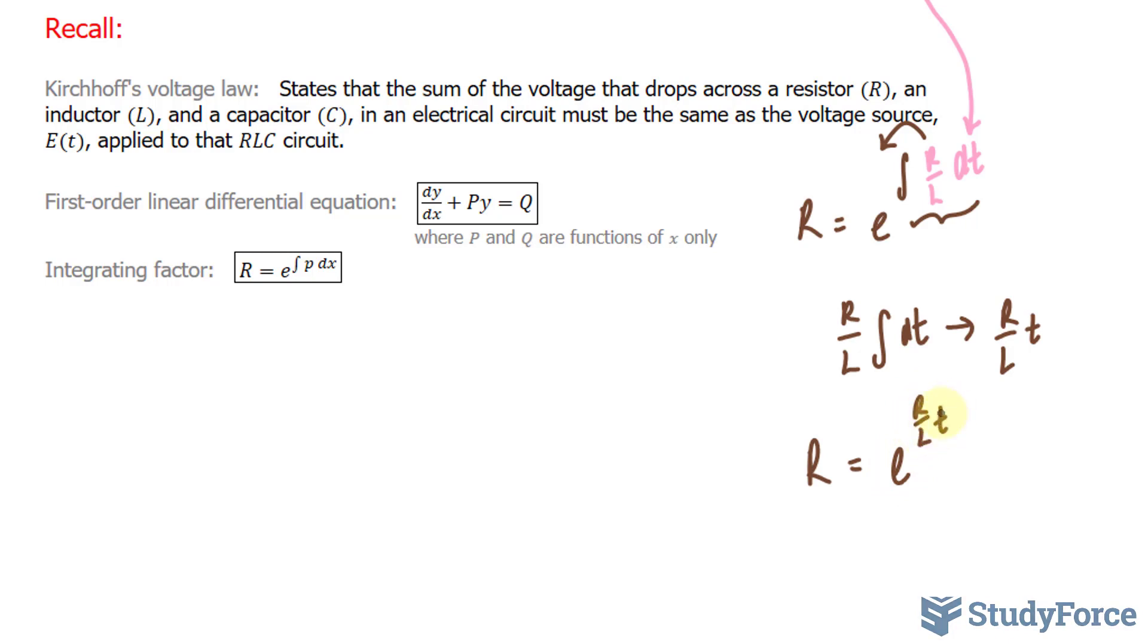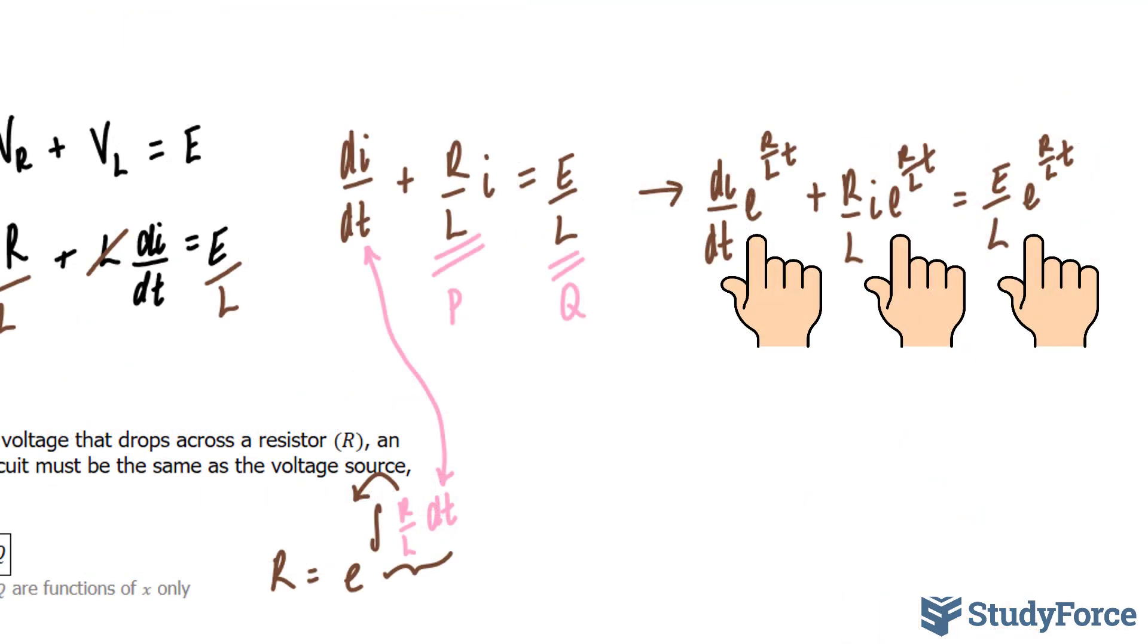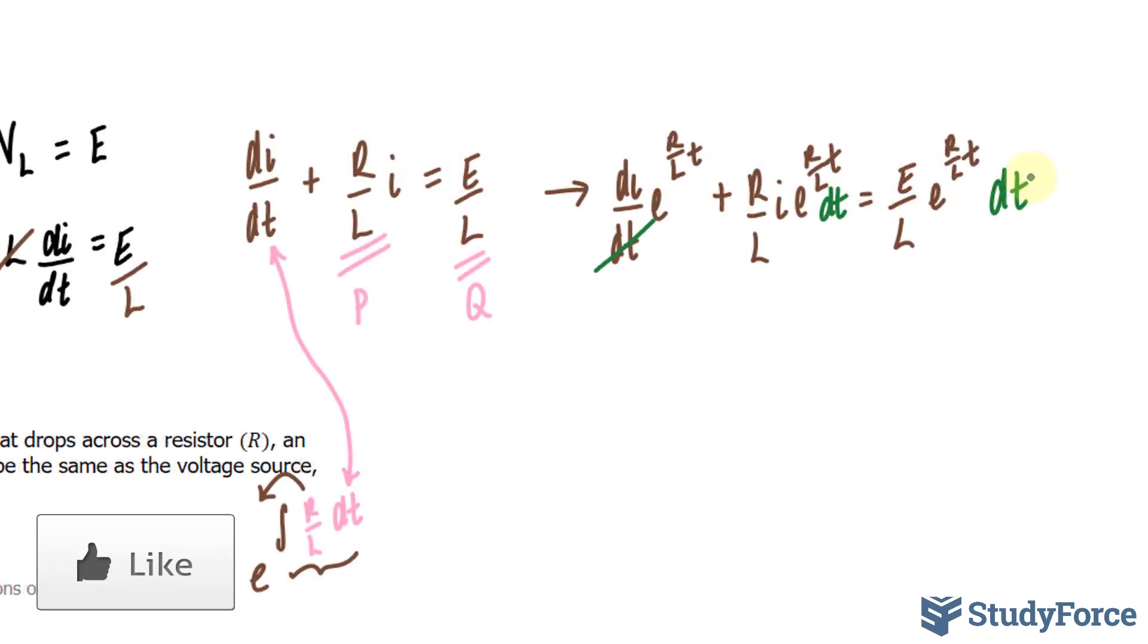Now that we found our integrating factor, I'll take this expression and multiply each of these terms by R. I'll fast forward this part and show you what you should end up with. Next, what I'll do is multiply both sides by dt. I want to clear out this dt, and if I do that, this goes away and we're left with one over here and one over here. So our expression currently looks like this, where we have e to the power of R over LT times dI plus R over L I times e to the power of R over LT dt is equal to E over L times e to the power of R over LT dt.